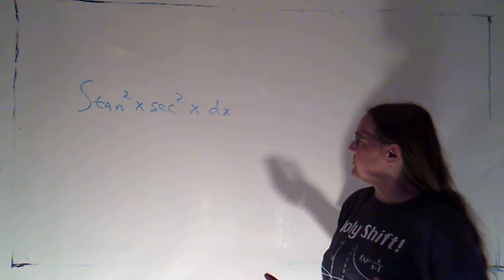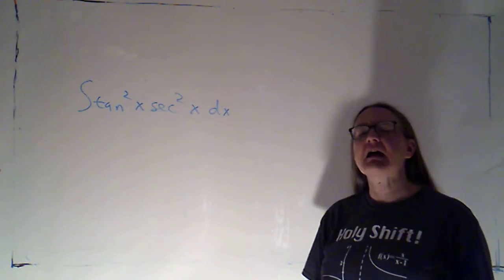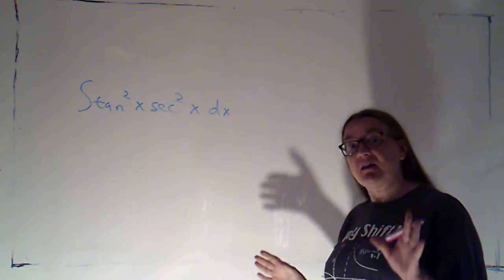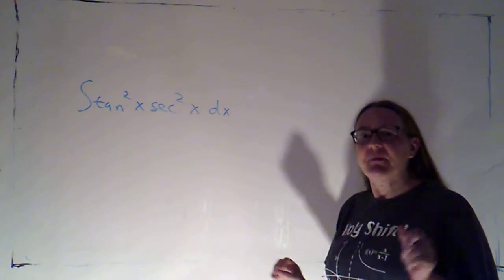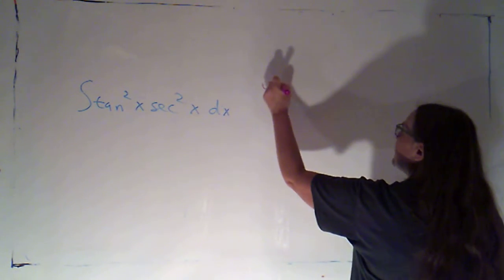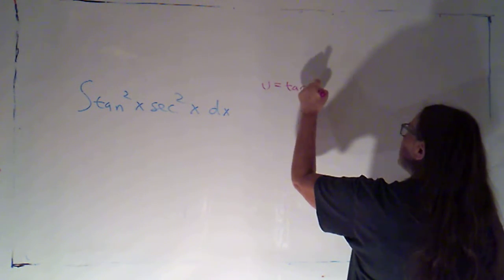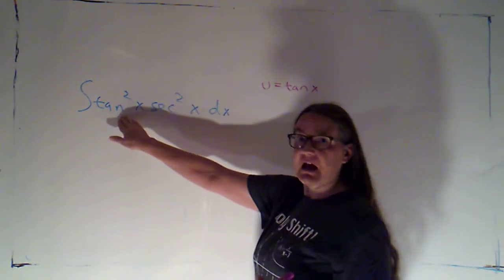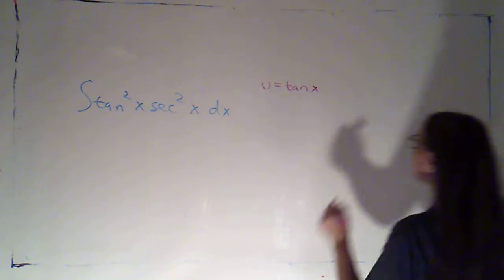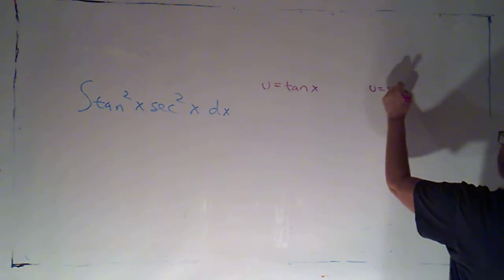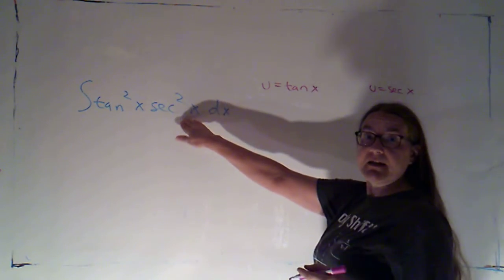So when I have two compositions, there are two different inside parts. Now, you might see which one is likely to work, but if you're not sure, I suggest you write out both of them. So one option would be to let u equal tangent of x, that's the inside part here. The other option would be to let u equal secant of x, that's the inside part here.